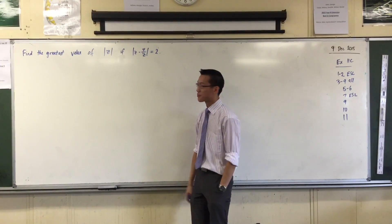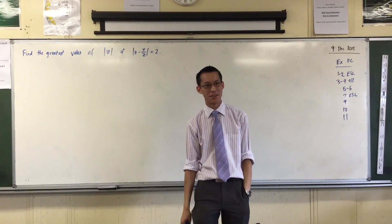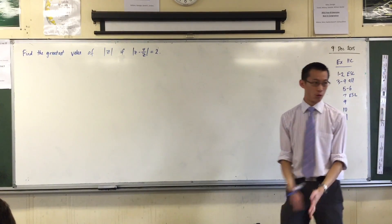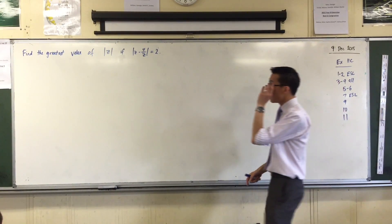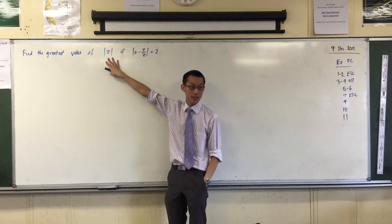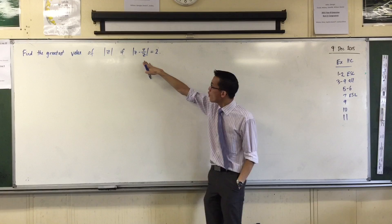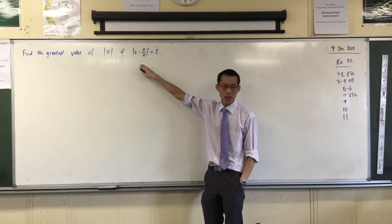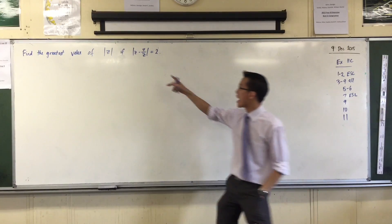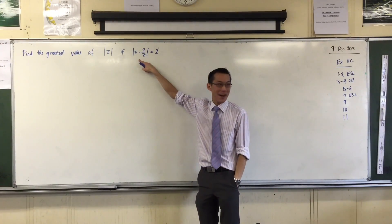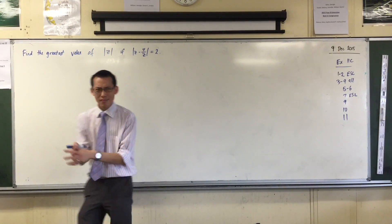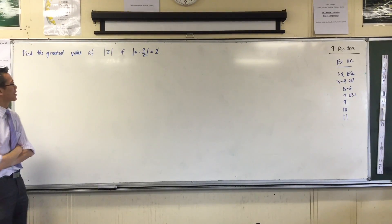Here's the question, simple setup, complicated answer, kind of. So let's just think about what the question is, and then we'll go about tackling it. Find the greatest value of the modulus for z, how far z is away from the origin. If you know this about z, z is a particular set of complex numbers, such that this awful mess is equal to 2, this distance.